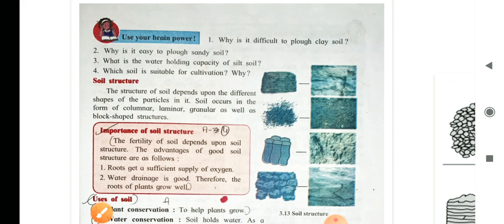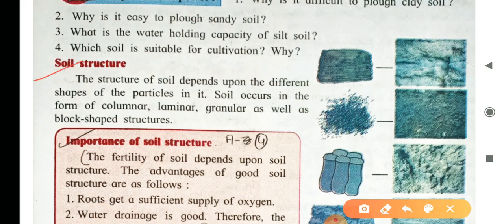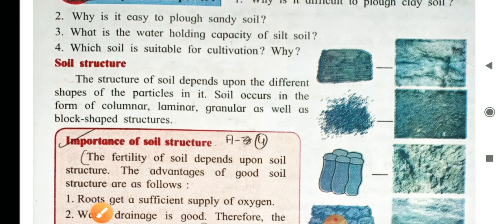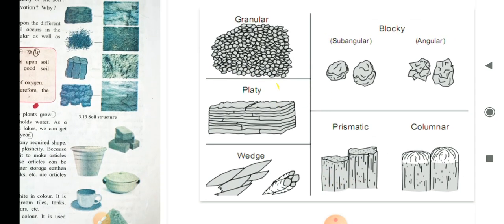Now, let us see the soil structure. The structure of the soil depends upon the different shapes of the particles in it. Soil occurs in the form of columnar, laminar, granular as well as block-shaped structure. You can see 4 structures here in the slide also but more are shown here.